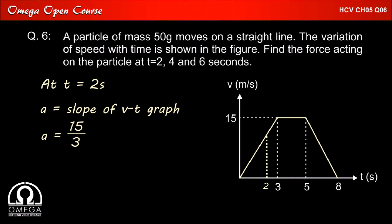the change in velocity in first 3 seconds is 15 meter per second. So the slope of the graph or the acceleration for the first 3 seconds shall be 15 divided by 3, that is 5 meter per second square.